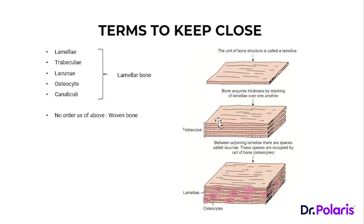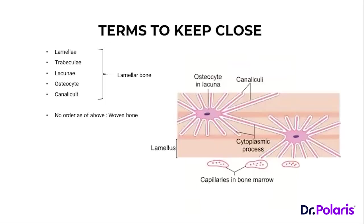The fourth important term is canaliculi. Osteocytes have cytoplasmic processes extending outward. Adjacent osteocytes communicate with each other through these cytoplasmic processes — the two processes fuse together. These communication channels are called canaliculi. Nutrients are exchanged and all cellular communication between osteocytes occurs through the canaliculi.